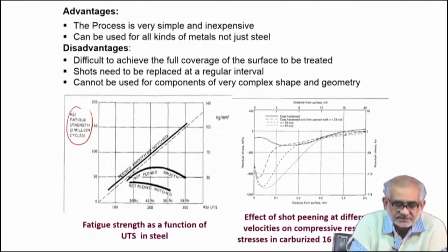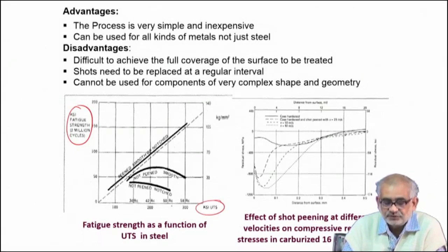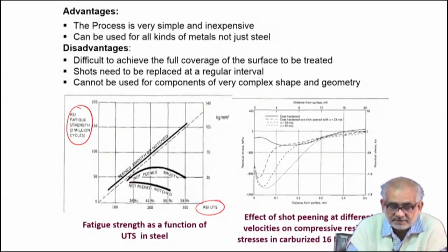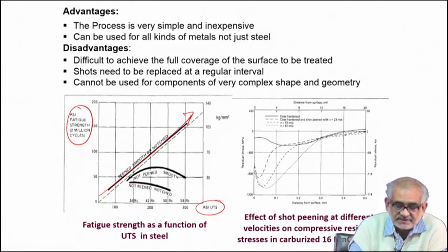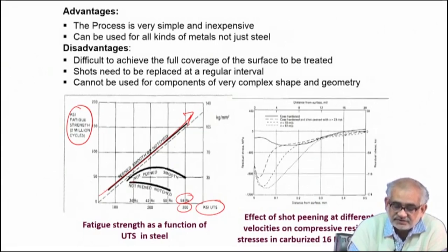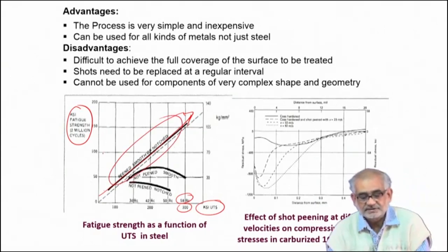Comparing fatigue strength of a particular material against its UTS: the steel material without shot peening shows a certain behavior, but with shot peening the fatigue strength uniformly increases as UTS goes up. At higher levels of UTS or hardness, after shot peening the fatigue strength of the material uniformly increases — certainly very beneficial for all kinds of rotating components.